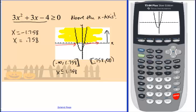So the other one in inequality form would be x greater than or equal to 0.758. And that's how you would solve this inequality using your calculator.